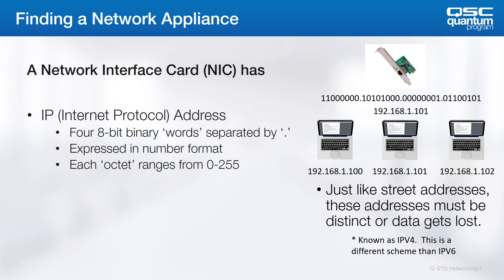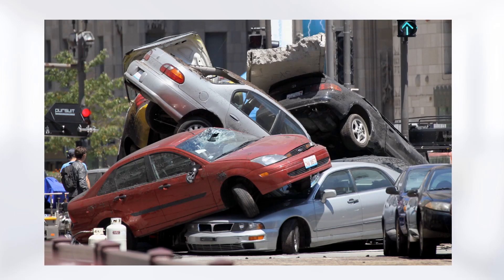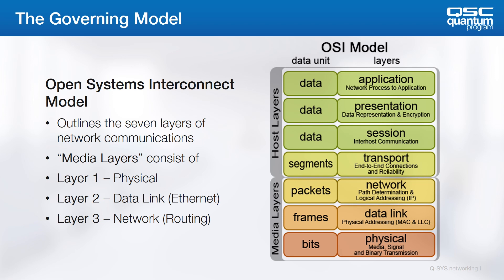So far we've discussed the two major ways devices are addressed — their global and logical addresses. But this knowledge alone doesn't explain how we get data from one device to another without a pileup. Luckily, there is a governing model of how Ethernet-based technologies work. That model gives rise to network protocols with the appropriate functions to make networks work. This governing model is known as the Open Systems Interconnect, or OSI model. It's nerdy, but it works.